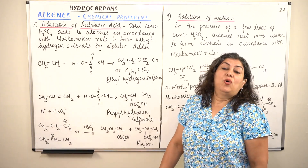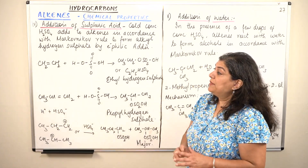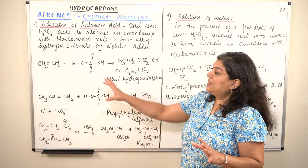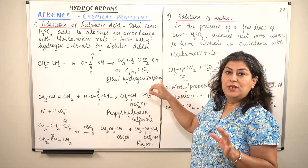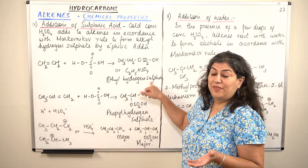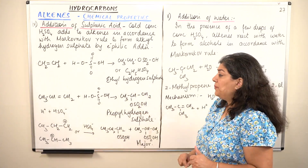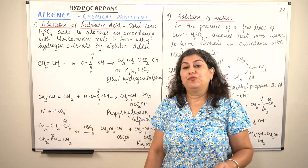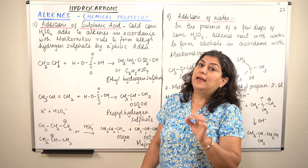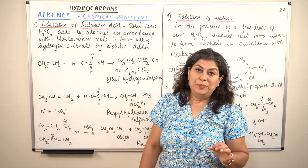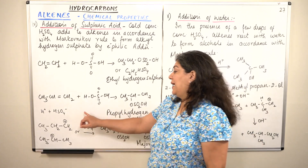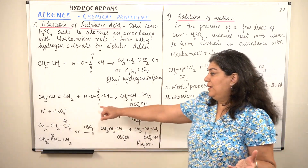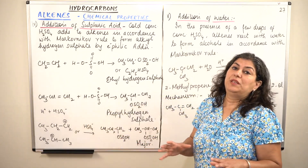To summarize: when H₂SO₄ is added to a symmetrical alkene, you get an alkyl hydrogen sulfate. If it is an unsymmetrical alkene, the addition of H₂SO₄ is an electrophilic addition following Markovnikov's rule, and the substitution of the negative ion on the secondary carbon gives the primary product.